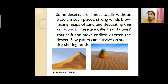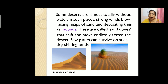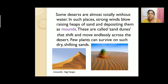Where there is no water, strong winds blow and the sand rises and gets deposited in another place, forming a mound. That is called a sand dune. These sand dunes keep shifting from one place to another because of the strong winds. Even so, some plants can be seen surviving in these desert sand dunes.